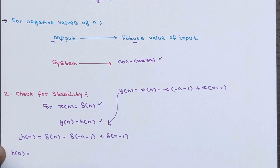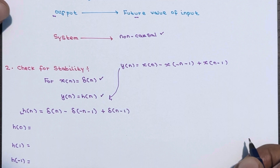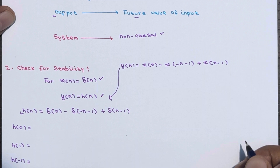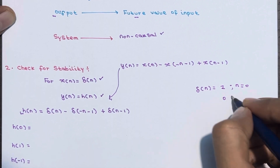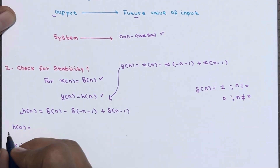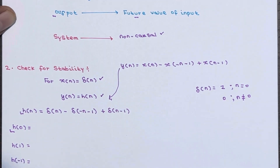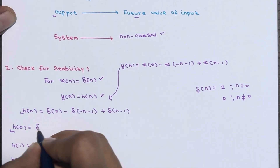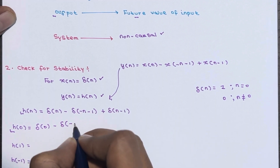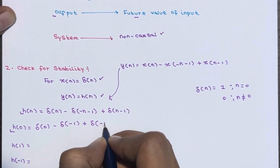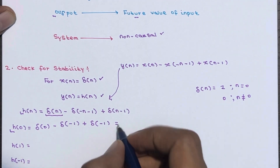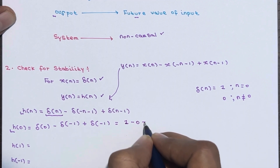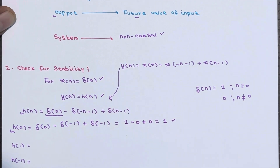δ(n) is only defined when n = 0, where it equals 1, and is 0 everywhere else. Let's calculate h(0): δ(0) - δ(-(-0)-1) + δ(0-1) = δ(0) - δ(-1) + δ(-1). At n = 0, only the first term gives a value of 1, so overall it becomes 1 - 0 + 0 = 1.